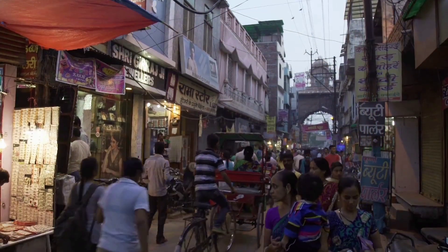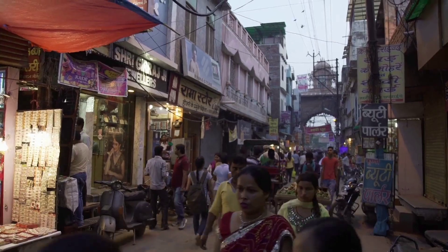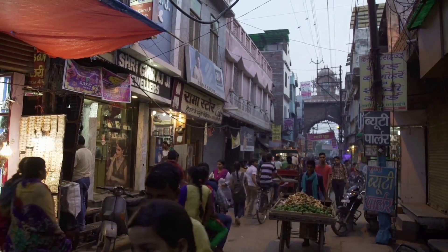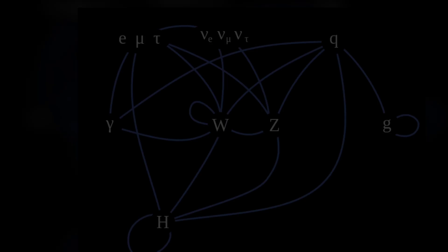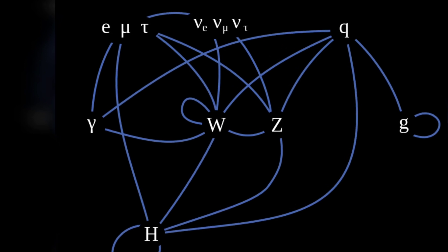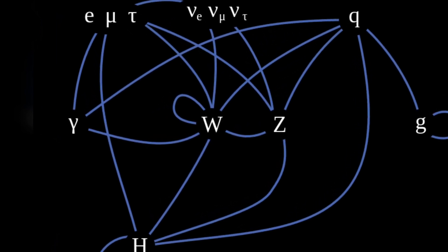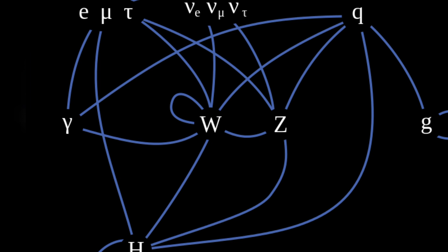In 2013, Peter Higgs was given the Nobel Prize in Physics for his discovery of Higgs boson, popularly known as the God Particle. Peter Higgs had discovered the particle mathematically around 48 years ago in 1964, when he published his theory.